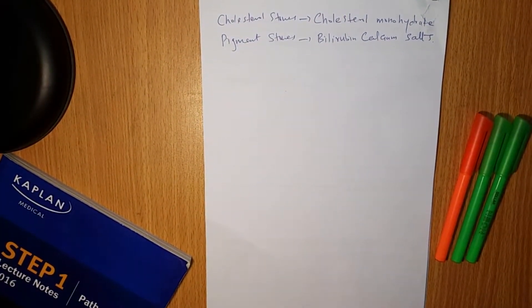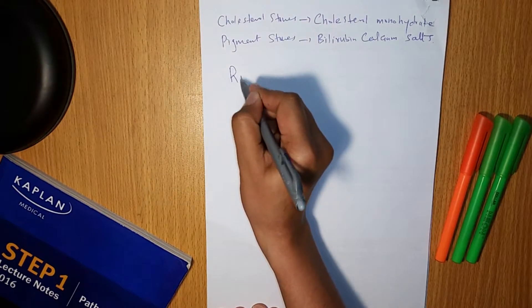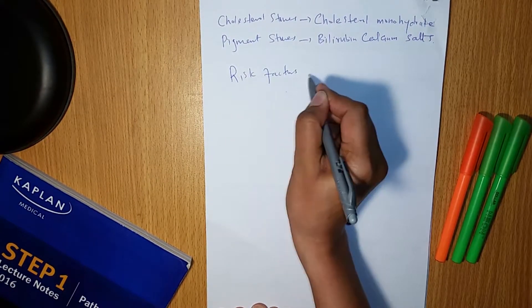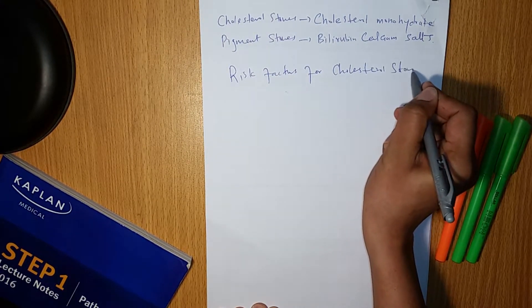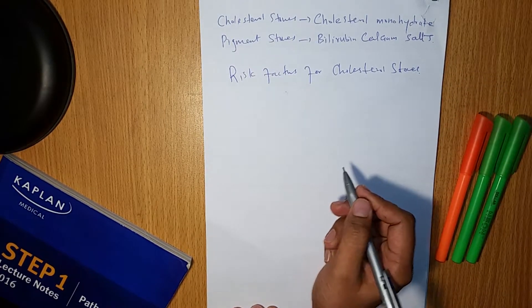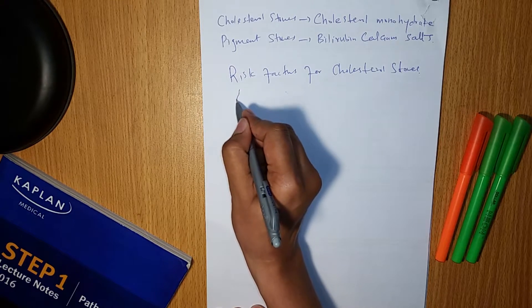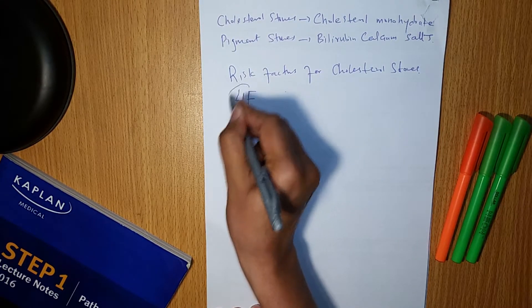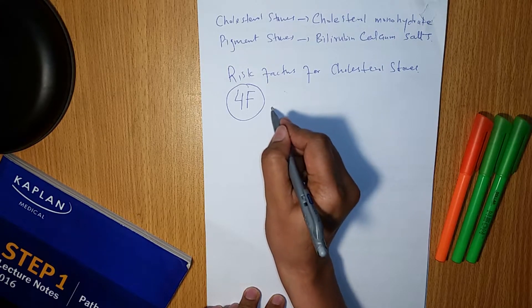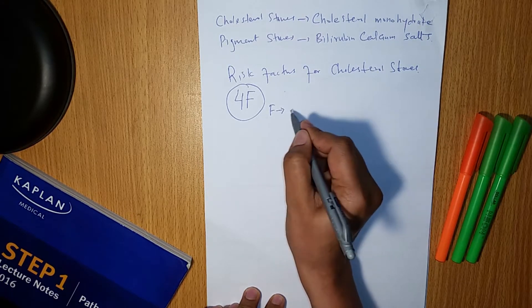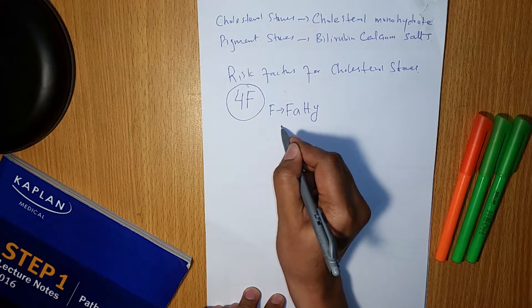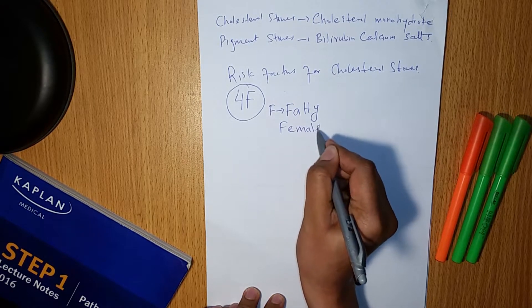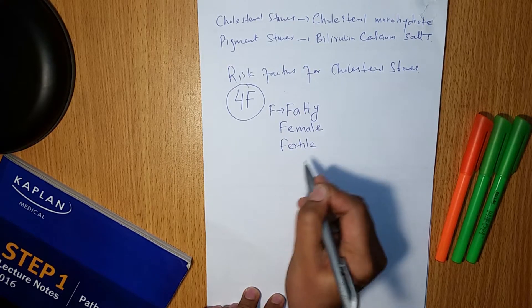Now, what are the risk factors for cholesterol stones? You can remember the risk factors for cholesterol stones by the mnemonic 4F. The four F's are: Fatty, Female, Fertile, and Faulty.